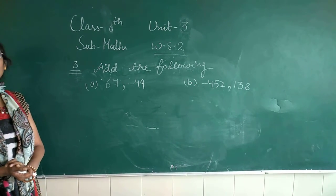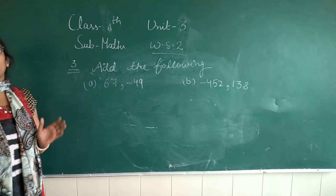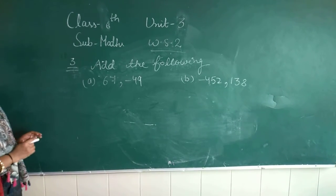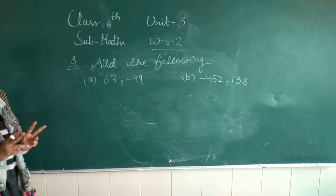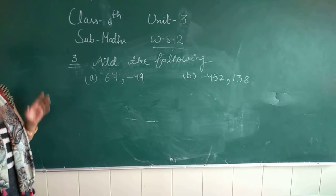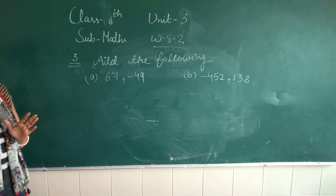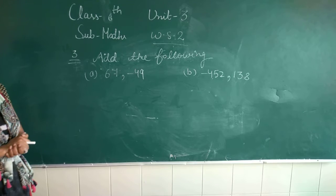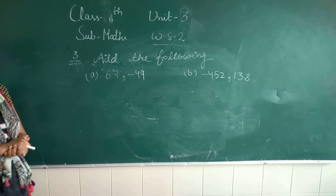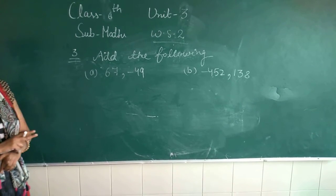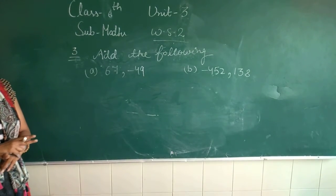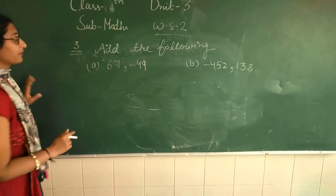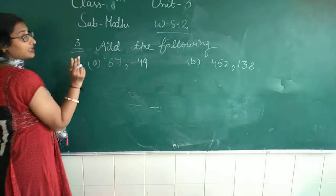I already told you about the addition and subtraction of integers. When there are two same signs, means when there are two positive integers, then there will be always plus. When there are two negative integers, then there is also plus. When there are integers of opposite sign, then there will be minus. Now, relating to this,